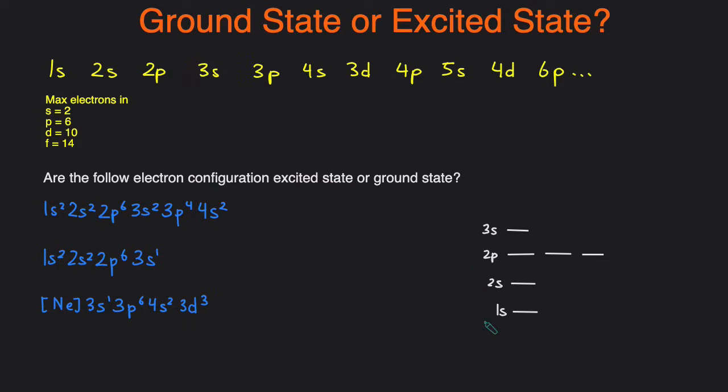For example, I have an energy level diagram right here and if you had an electron configuration that looks like this that would be considered ground state because you have filled in all the lower levels before you filled the higher levels.